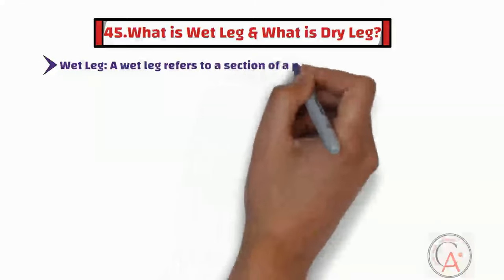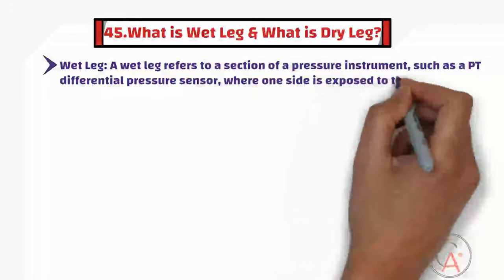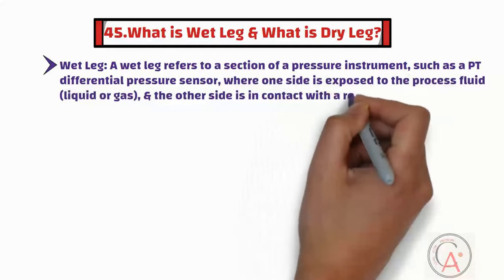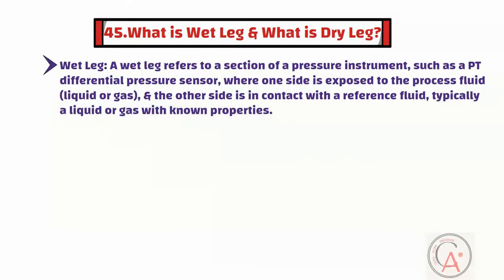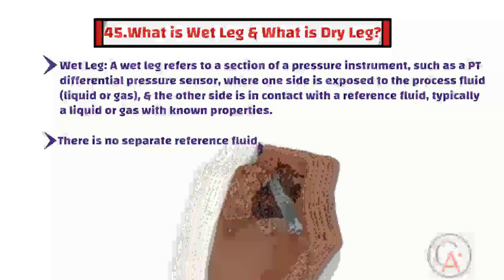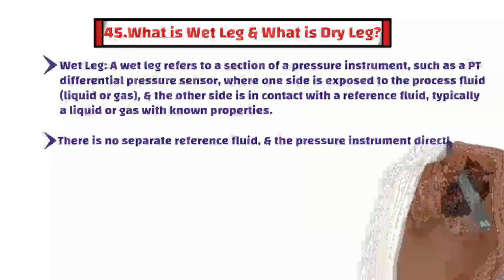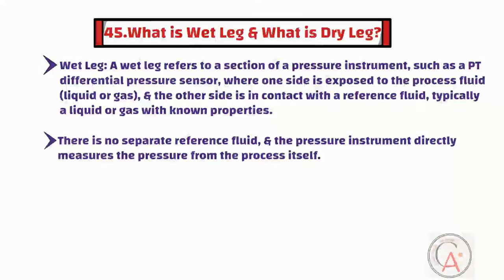Question forty-five is: what is a wet leg and what is a dry leg? A wet leg refers to a section of a pressure instrument, such as a pressure transmitter or differential pressure sensor, where one side is exposed to the process fluid and the other side is in contact with a reference fluid with known properties. In a dry leg setup, there is no separate reference fluid, and the pressure instrument directly measures the pressure from the process itself. Dry leg configurations are used in situations where it is not practical or necessary to use a separate reference fluid.